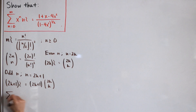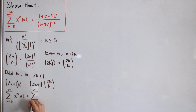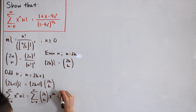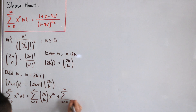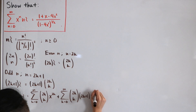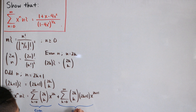Now starting with the left-hand side — the generating function sum from n=0 to infinity of x^n times the swinging factorial of n — we split it into even and odd terms: the even sum is Σ C(2k,k) · x^(2k) from k=0 to infinity, and the odd sum is Σ C(2k,k) · (2k+1) · x^(2k+1) from k=0 to infinity.